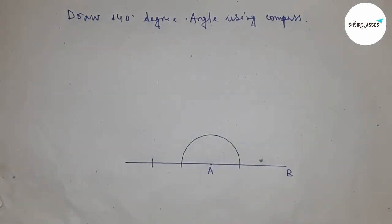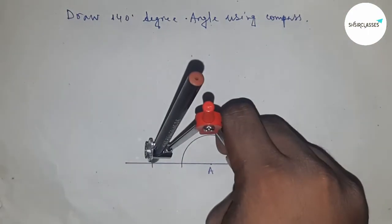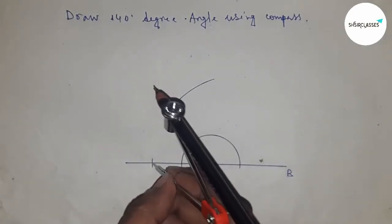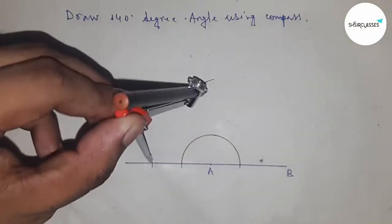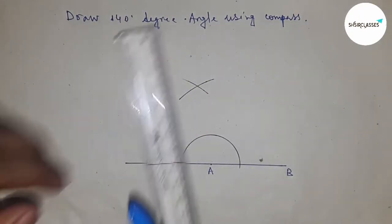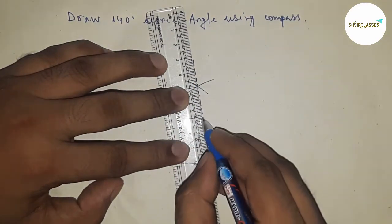Next, taking the length from this to this by compass and drawing an arc here with the same length. Putting the compass here and cut the arc by this way. Next, joining A to this, and this is a 120 degree angle.